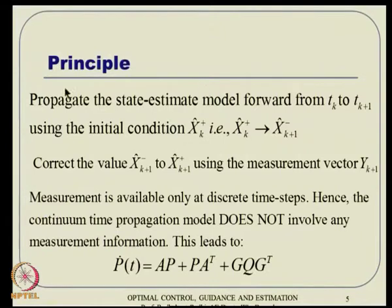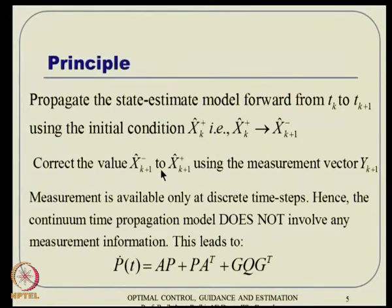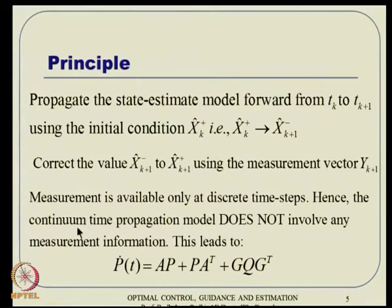The principle is: propagate the state estimate model forward from T_k to T_{k+1} using the initial condition x_hat_k plus. Then correct the value from minus to plus at k+1 using the measurement vector y_{k+1}. The measurement is available at discrete time steps only, and hence the continuous time propagation does not involve any measurement information.